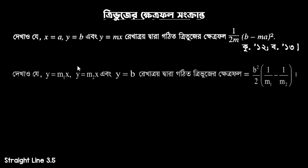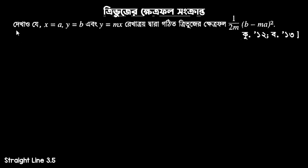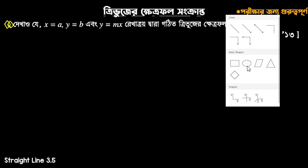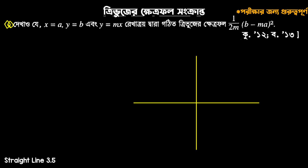Three-bhujer-khetra-fal — that's the two math problems. I'll do two-bhujer-khetra-fal equals something. This is one thing.